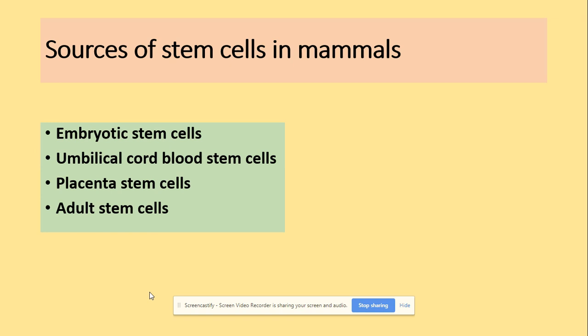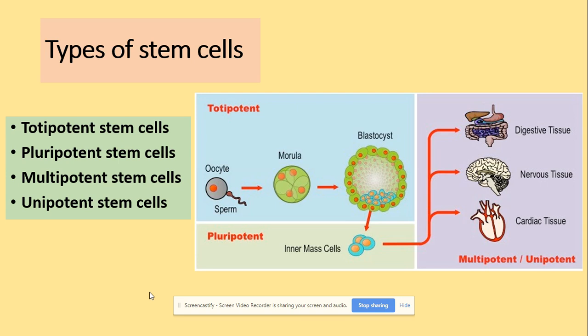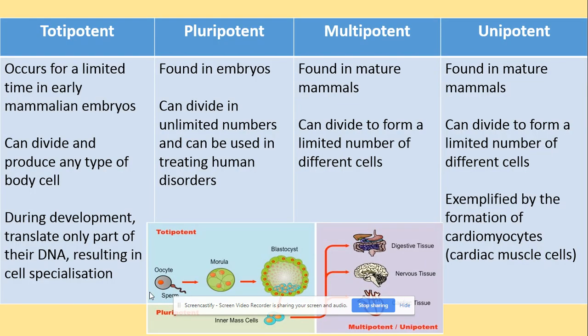In terms of the specification, you need to be able to describe four types of stem cells: totipotent, pluripotent, multipotent, and unipotent stem cells. Totipotent cells occur for a limited time only in early mammalian embryos. They can divide and produce any type of body cell, and during their development they can translate only part of the DNA, which results in cell specialization.